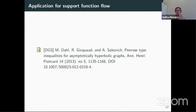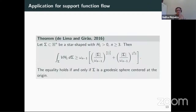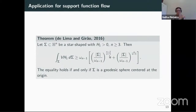In 2013, De Lellis and Müller showed that to prove a Penrose-type inequality for asymptotically hyperbolic graphs, it was necessary to prove this result: if sigma is a star-shaped hypersurface with mean curvature greater than zero, then it holds this inequality, which relates the integral of the mean curvature with the weight function and the powers of the area of the hypersurface and the area of the sphere. The equality holds if and only if sigma is a geodesic sphere centered at the origin. This result was proved by de Lima and Girão in 2016.